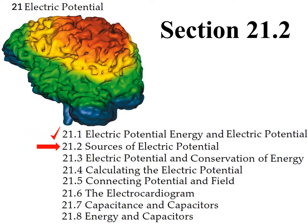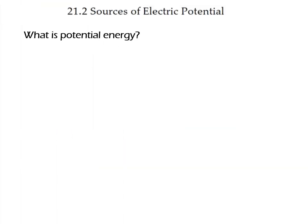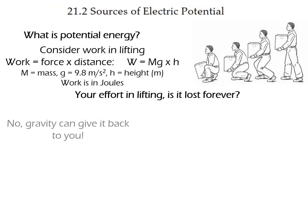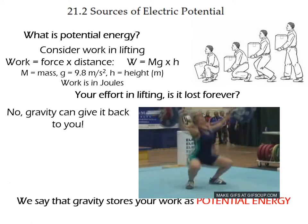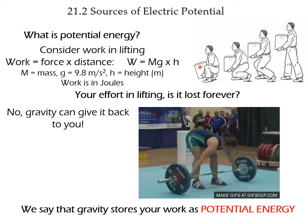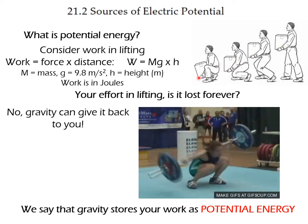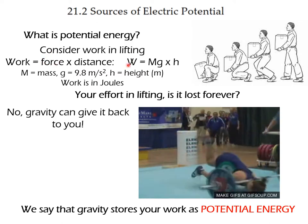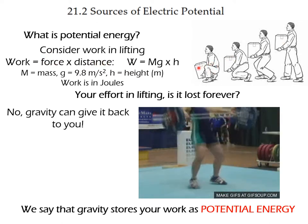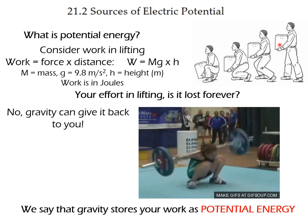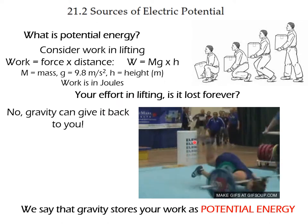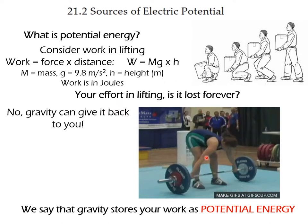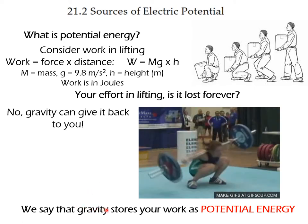Section 21.2 — in this section we're going to see the sources of electric potential. What is potential energy? We can think in terms of gravitational potential energy. In lifting something up, we have to do some work: force times distance, which is the weight times the distance lifted. That work is not lost forever — it gets stored, and you can get it back. Gravity stores the work as potential energy.